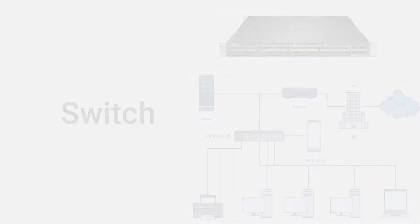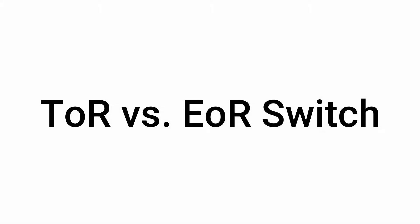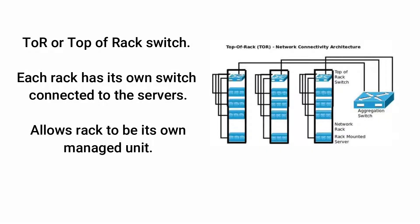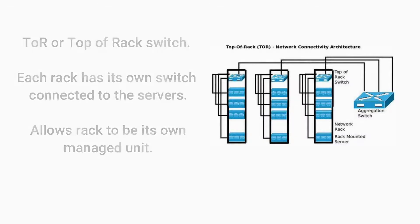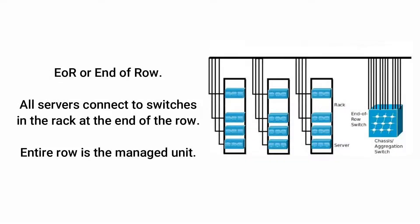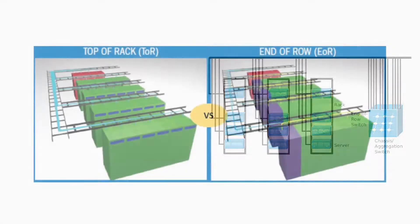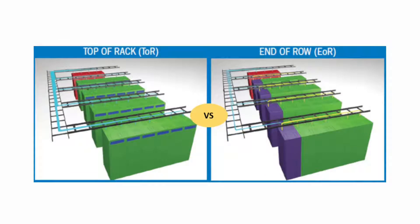Switches can be placed in different locations depending on the design of the data center. TOR, or top-of-rack, is used when each rack within the row has its own switch, making each rack its own managed unit. Alternatively, the client may use EOR, or end-of-row switches — the first rack within the row houses the switches connecting the hundreds of servers in the row together, making the entire row the managed unit. The type of layout varies site to site; if you are unsure, ask your project manager.